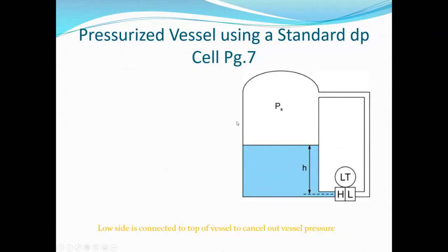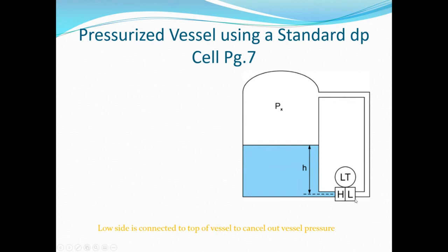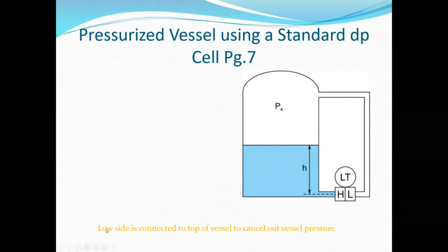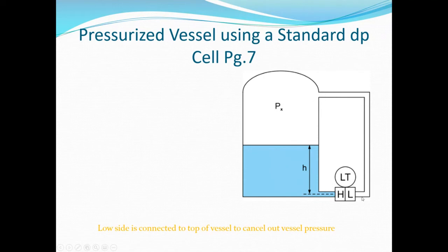Here is the second example: a pressurized vessel using a standard differential pressure transmitter. The vessel has a top, introducing a new value Px — the pressure of the gas above the process medium, whether atmospheric or a nitrogen blanket. There is also a connection from the top side of the vessel going to the low side of the transmitter. This cancels out the vessel pressure: whatever pressure is applied downward onto the process medium to the high cell is also applied to the low cell.